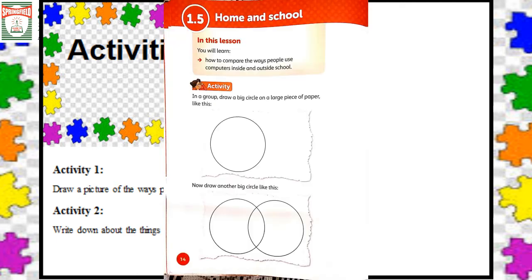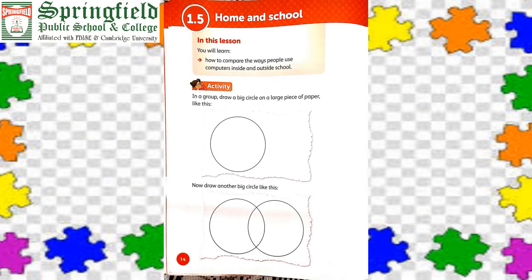Topic 1.5: Home and School. This section covers how to compare the ways people use computers inside and outside of school. In a group, draw a big circle on a large piece of paper, then draw another big circle. Now look at the pictures you have drawn of people using computers. Put all pictures of people using computers outside school in one circle, and all pictures of people using computers inside school in the other circle.